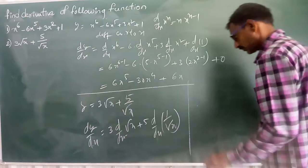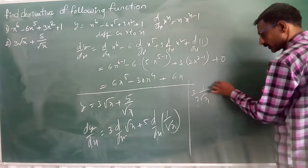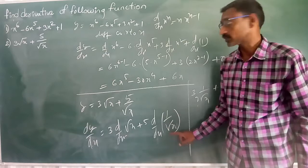I told you clearly, root x derivative is 1 by 2 root x. I will explain this as well. So 3 into 1 by 2 root x.